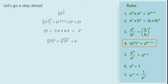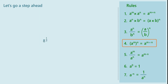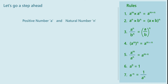Now, can you try to find the numbers represented by 8 raised to 1 upon 3 and 16 raised to 1 upon 4? Use the known rules and proceed similarly to get the answers. In general, for a positive number a and a natural number n, using the rule a raised to m, whole raised to n, equals a raised to m into n, we can write a raised to 1 upon n, whole raised to n, as a raised to 1 upon n into n, which is a raised to 1, or simply a. Equivalently, a raised to 1 upon n is a number whose nth power equals a; that is, a raised to 1 upon n equals the nth root of a.